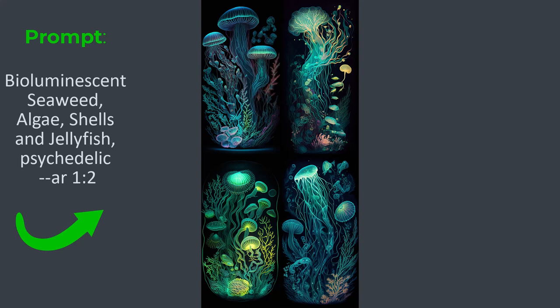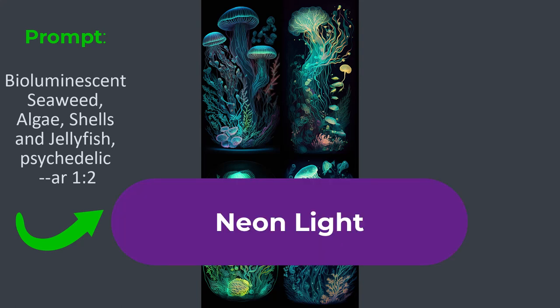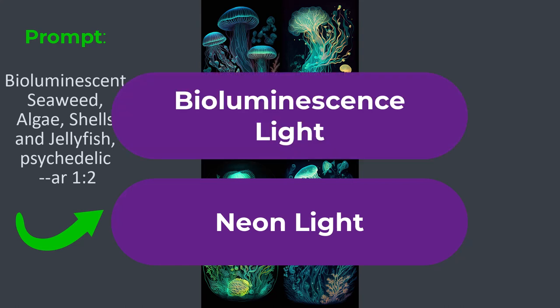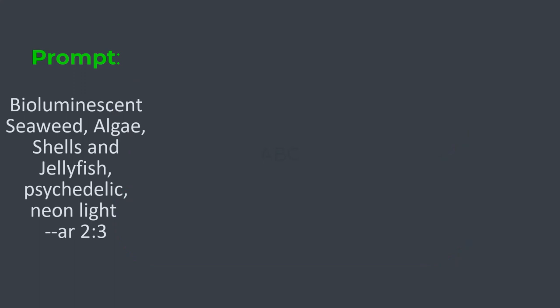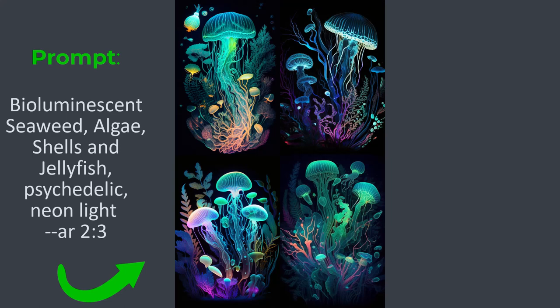Let's quickly test the second keyword on the same prompt, and then we will use both on a few other objects. The second keyword related to magic lighting is 'neon lighting', and trust me, using these two keywords you can convert any simple image prompt to a magical output. I have changed the aspect ratio to 2:3, and we get this result which has a lot more glowing appearance compared to the previous one.